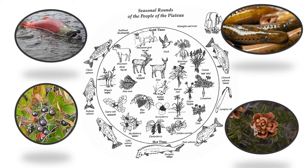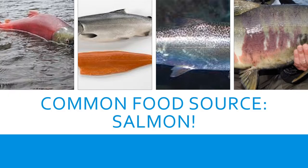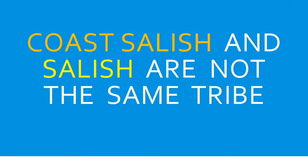The people of the plateau have huckleberries, pine nuts, and lamprey — lamprey are not technically eels but sure look like eels; they are dried and used in a variety of ways as foods. There's also another species of salmon. The common food source in all of them is salmon, and that creates a sense of collective identity for the native people of the northwest. In fact, many refer to themselves as salmon people.